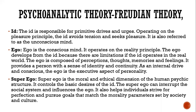The Ego is the conscious mind and operates on the reality principle. The ego develops from the ID because there are limitations when the ID operates in the real world. The ego is composed of perceptions, thoughts, memories, and feelings, providing a person with a sense of identity and continuity. It is the executive aspect of personality.